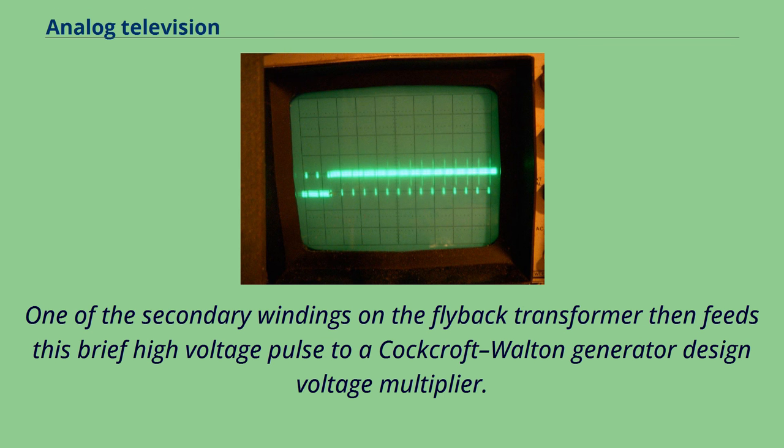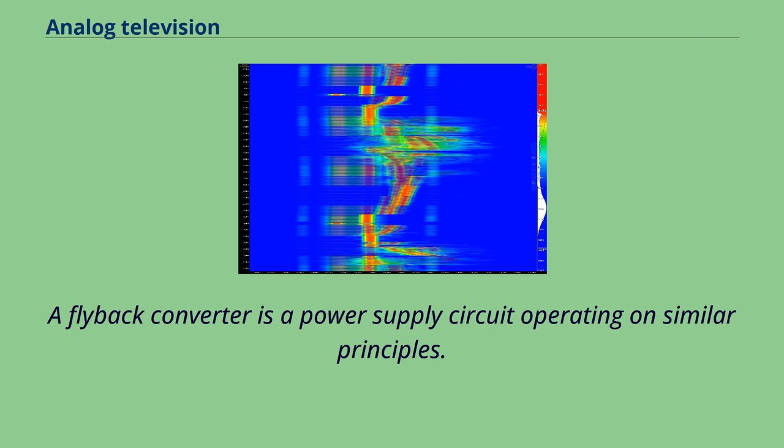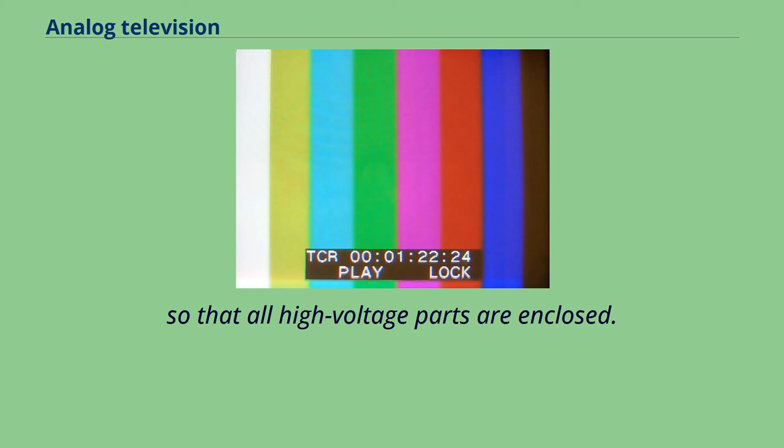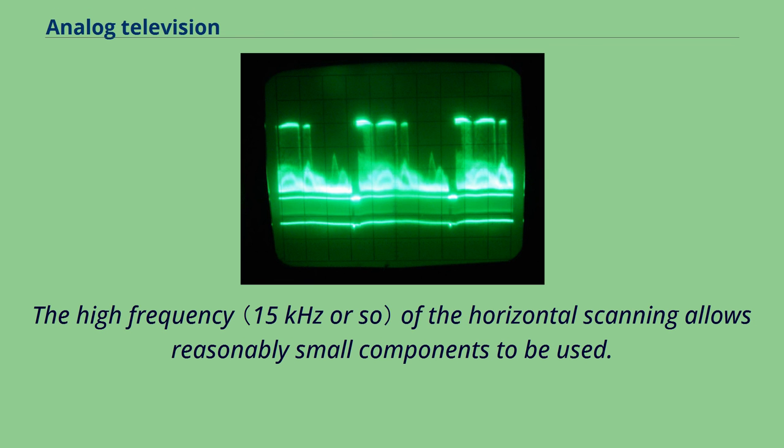In many countries, over the air broadcast television of analog audio and analog video signals has been discontinued, to allow the reuse of the television broadcast radio spectrum. The first country to make a wholesale switch to digital over the air broadcasting was Luxembourg in 2006, followed later in 2006 by the Netherlands, in 2007 by Finland, Andorra, Sweden and Switzerland, in 2008 by Belgium and Germany, in 2009 by the United States, southern Canada, the Isle of Man, Norway and Denmark.